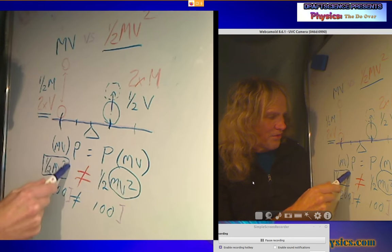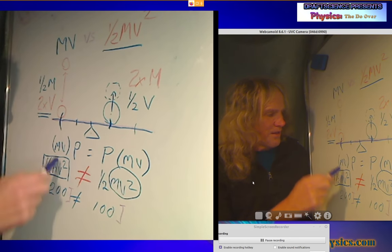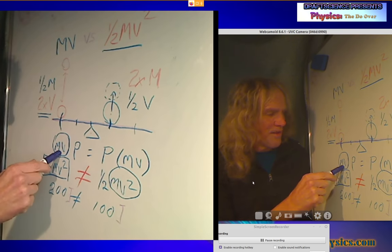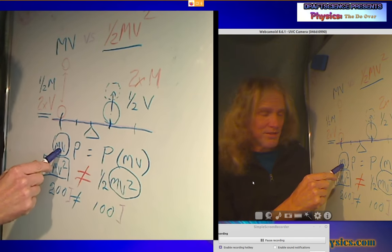This has nothing to do with reality. Okay, the only thing that matters is MV. Newton made correct predictions with MV. Descartes made correct predictions with MV.